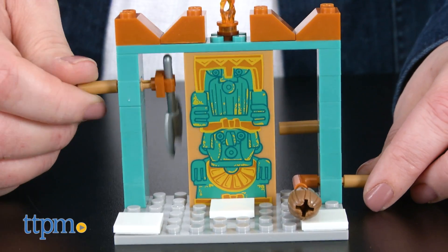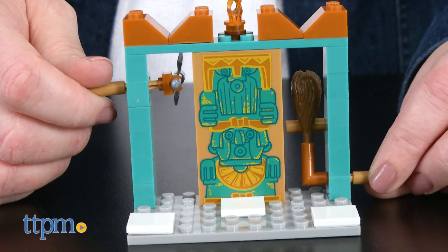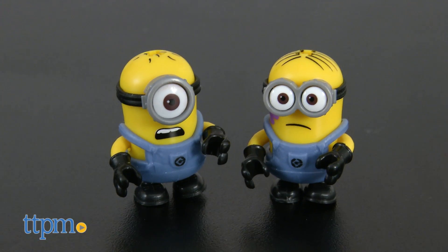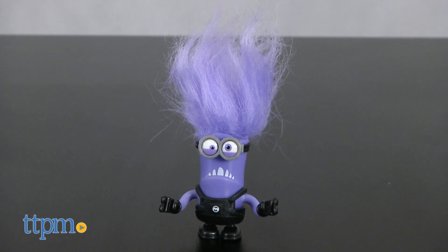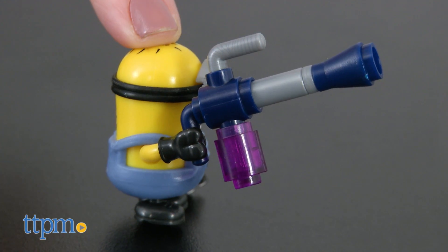Using the set's 77 pieces, kids can build a small lair with two hand-activated booby traps. This set also comes with two buildable minions, a buildable evil minion, a chair, and a jelly gun weapon.